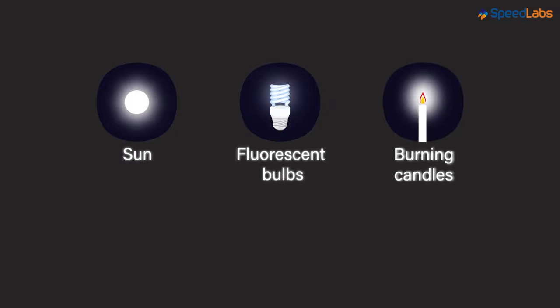Some objects can generate their own light. For instance, the sun, the fluorescent bulbs, burning candles can generate their own light. The objects which generate their own light are called the luminous objects.